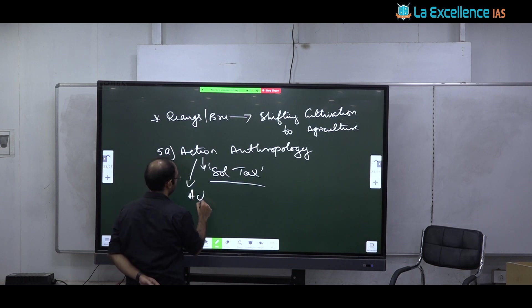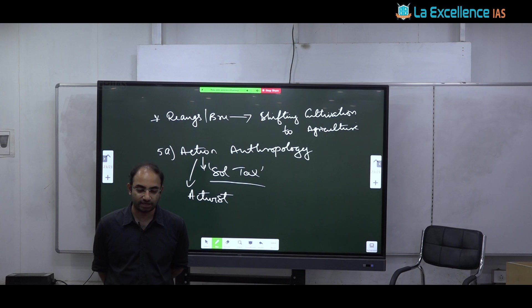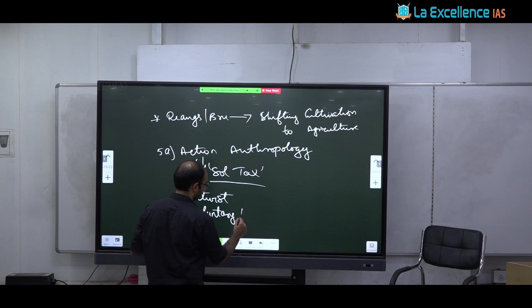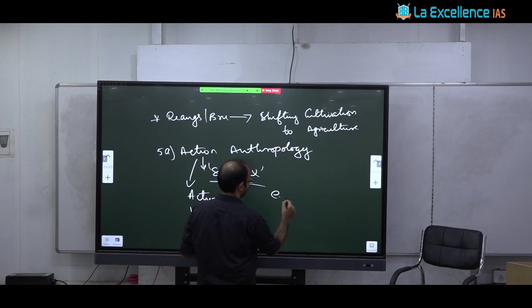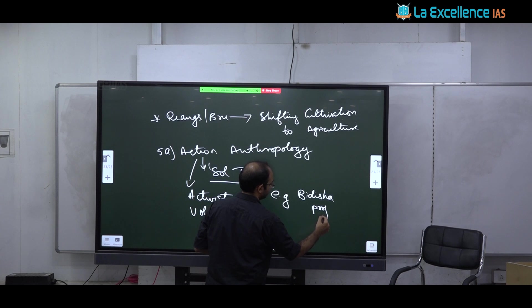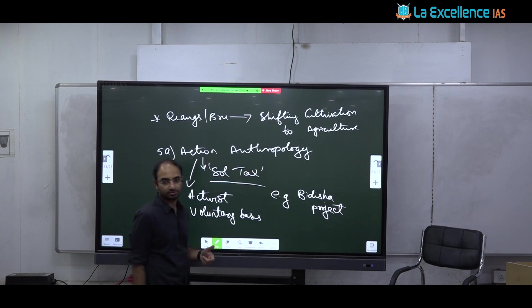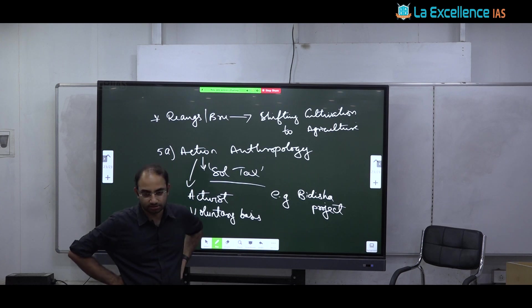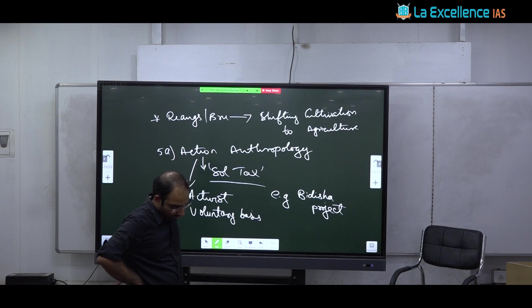Salt Axe coined this term. The idea of action anthropology is that anthropologists, anthropology must become some kind of an activist discipline. This is like an extension of post-modernist thinking. That anthropology must become activist like. And anthropologists must take up projects for tribal development on a voluntary basis. Not by accepting funds from government. In fact, one example of action anthropology in India is what we discussed earlier in D&T. Vidisha project of P.K. Baumik is an example of action anthropology.